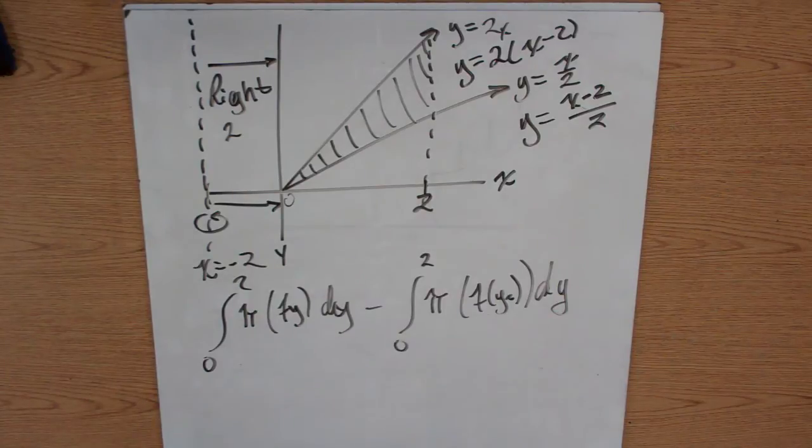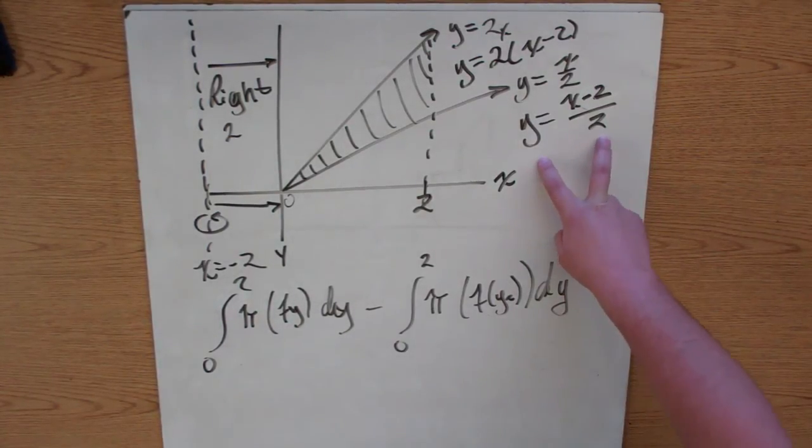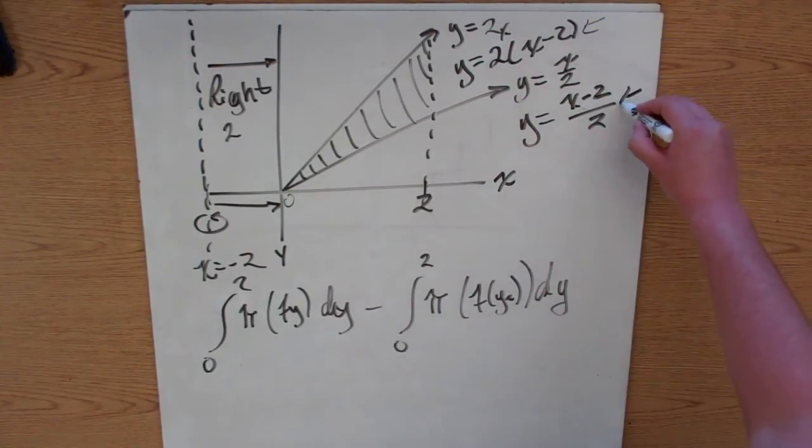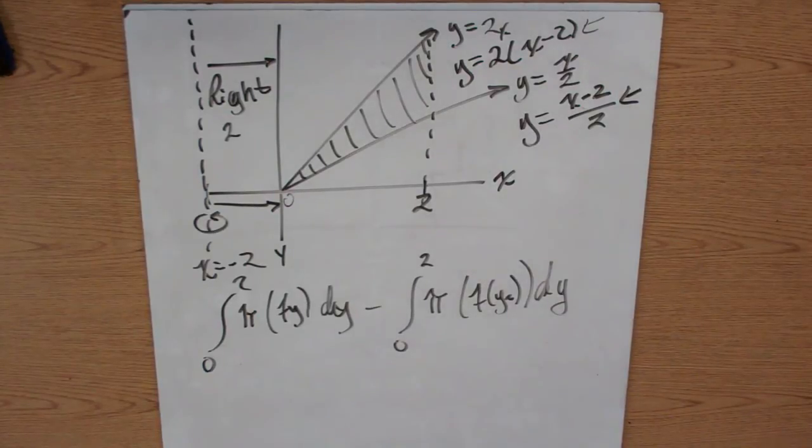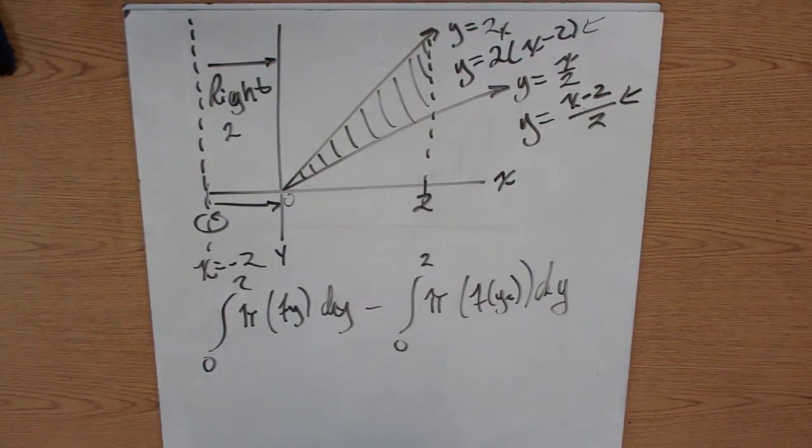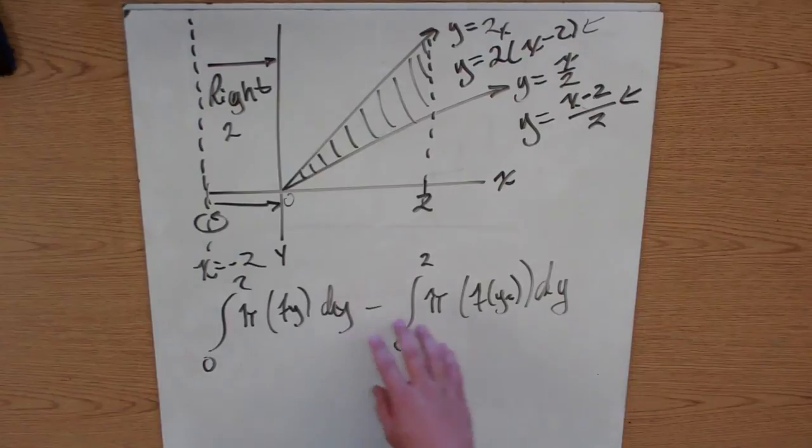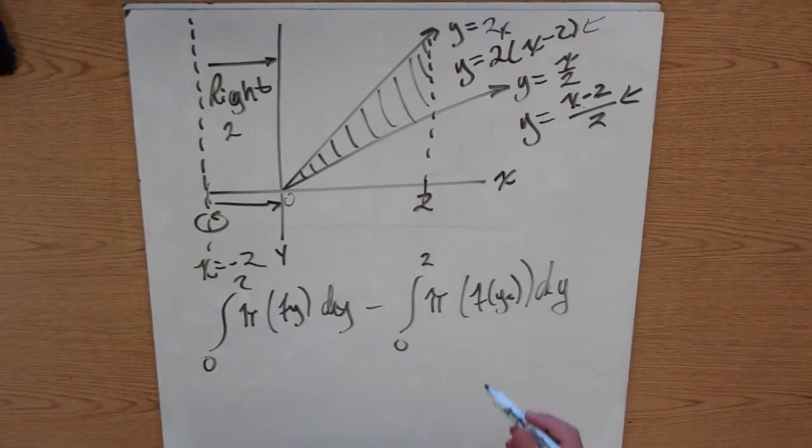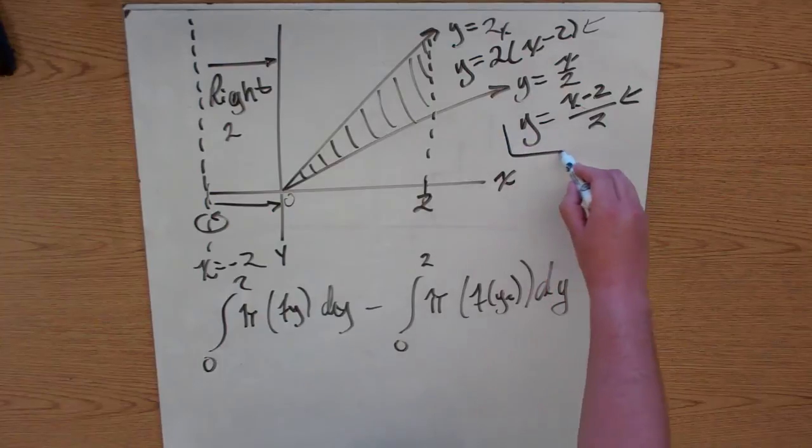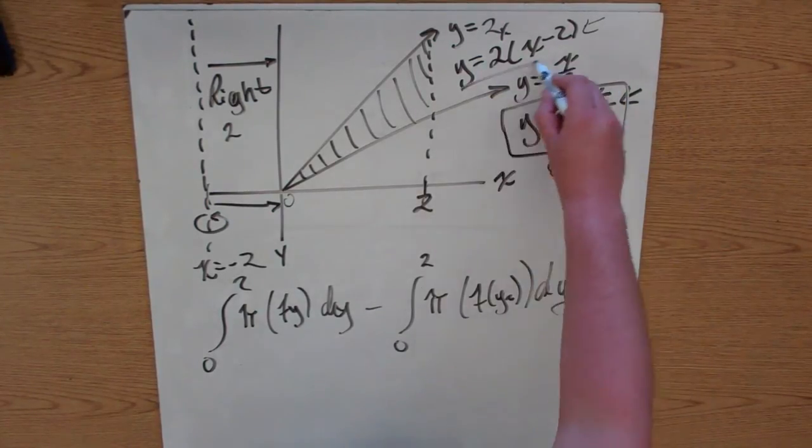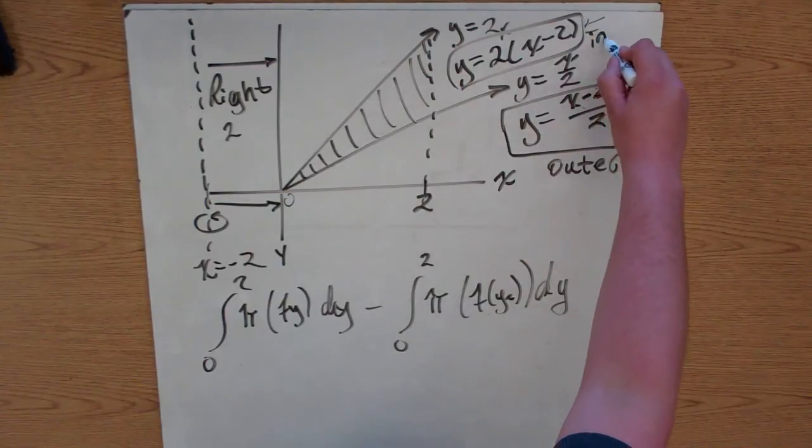So you still do it the exact same way. Except now, before we can do this, we have to solve our two new functions for x in order to do this. Because we're revolving it around the equivalent of the y axis. So you still do it the same way. Your outer minus your inner. And remember, your outer in this case is the function further away. So this is what you'd use for your outer. And this one is what you'd use for your inner.